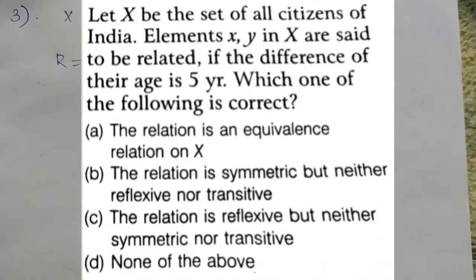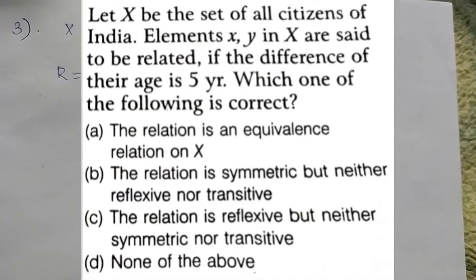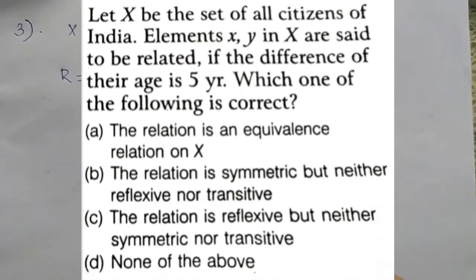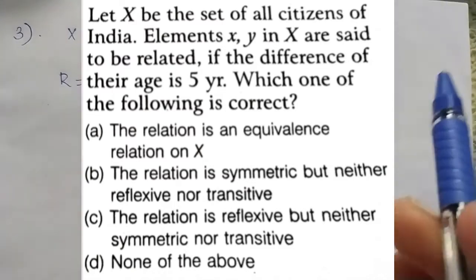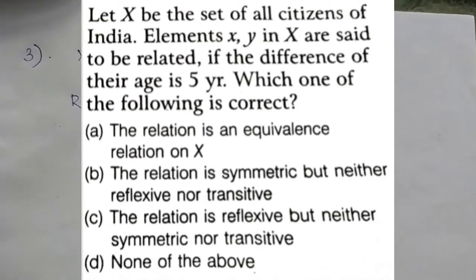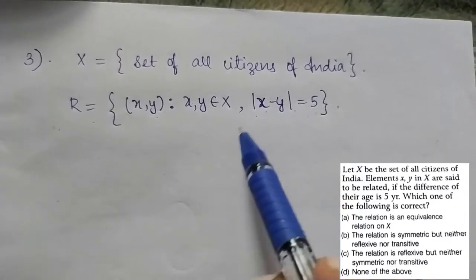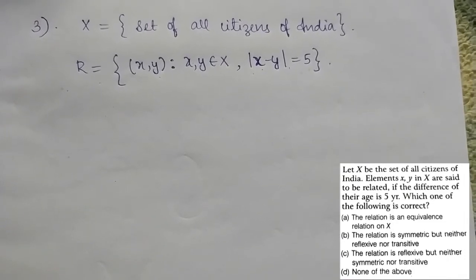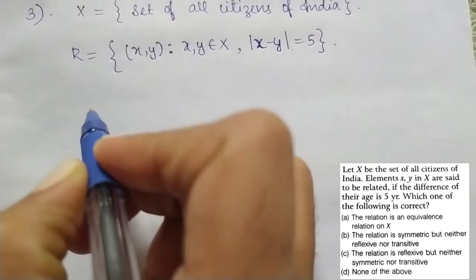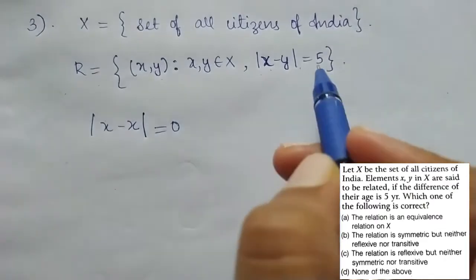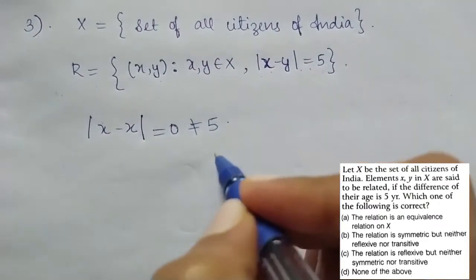Next question: X is the set of all citizens of India. The relation is defined as: x is related to y if |x − y| = 5, where x and y are ages of citizens. We check reflexivity: |x − x| = 0, and 0 is not equal to 5. That is not reflexive.